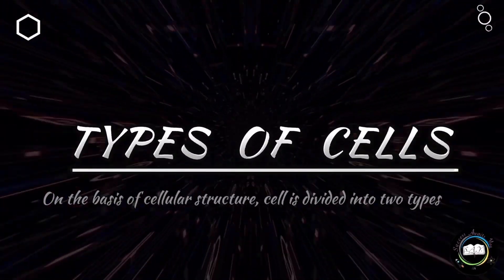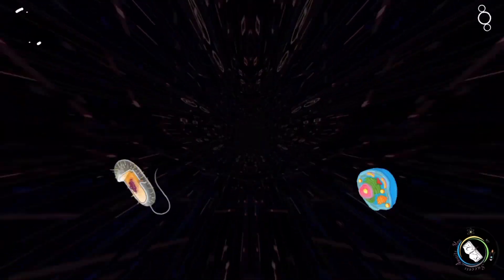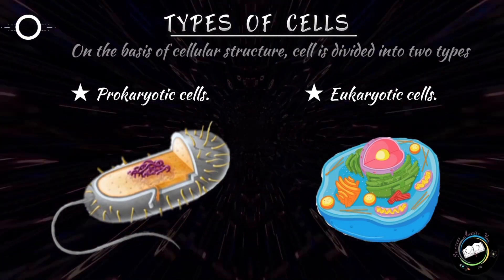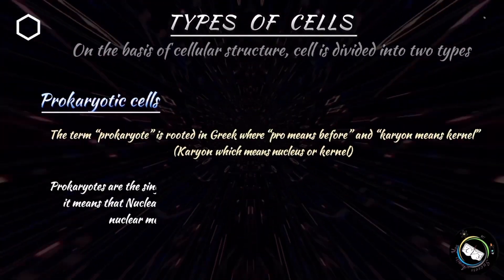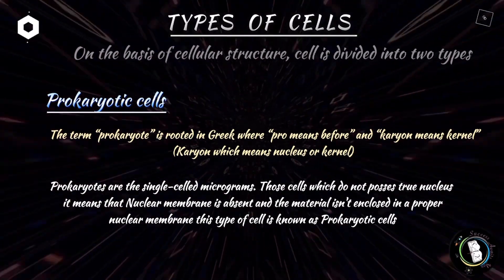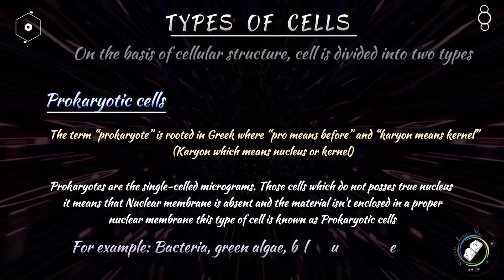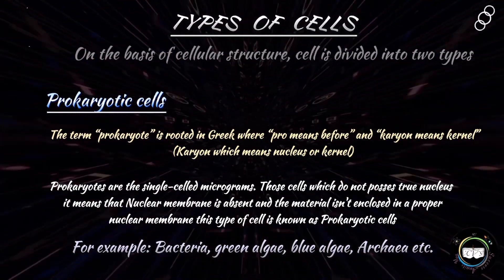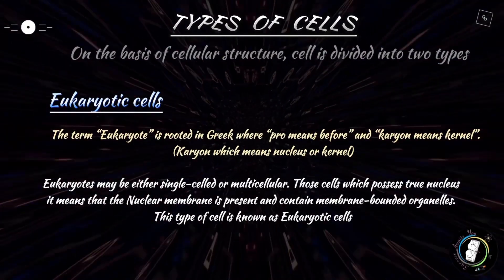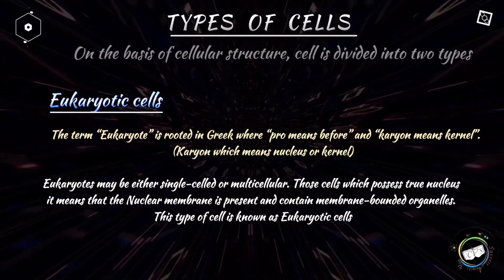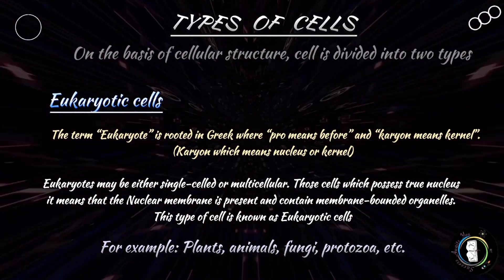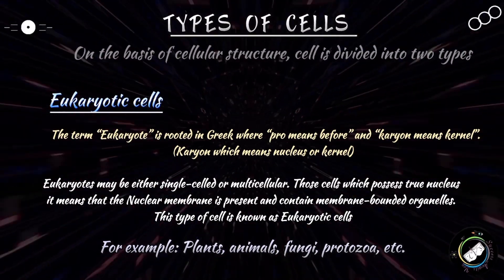Moving forward, let's talk about types of cells based on cellular structure. These are prokaryotic cells and eukaryotic cells. Prokaryotes are simple, single-celled organisms that do not have a true nucleus — for example, bacteria, mycoplasma, cyanobacteria, etc. Eukaryotes are complex, multicellular organisms that possess a true nucleus — for example, humans and plants.